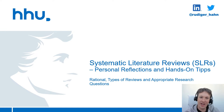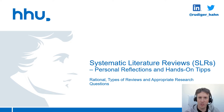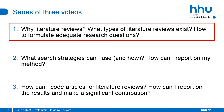Welcome to this video. My name is Rüdiger Hahn, I'm a professor of sustainability management. In this first of a series of three short videos on systematic literature reviews, I would like to talk about the rationale of literature reviews, different types of reviews, and also about appropriate research questions to help you in developing your own systematic literature reviews. The first video here is about why to do literature reviews, what types of literature reviews exist, and how to formulate adequate research questions.